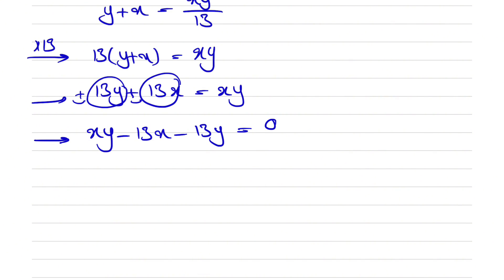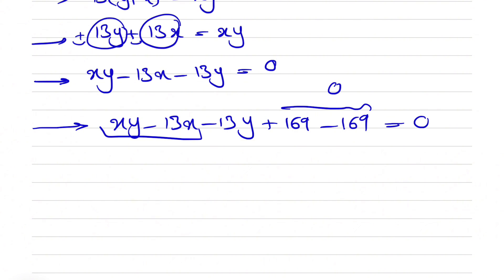So the trick that we're going to use here to simplify this is that we're going to add 169 on each side of the equation and we're going to subtract it too. So what we're going to get is xy minus 13x minus 13y plus 169 minus 169. So this will be zero, so no change in the equation that we have in the previous step. But the reason we did that is that we're going to pair each of these two.